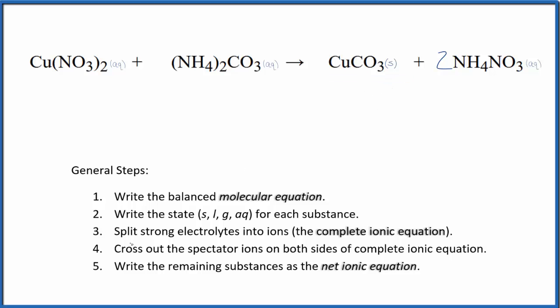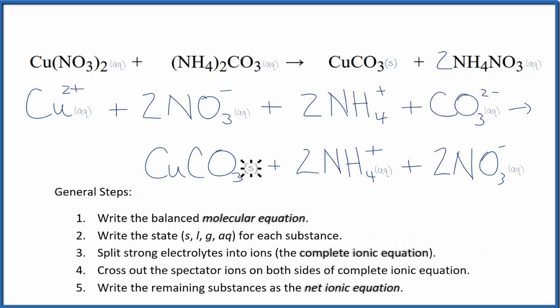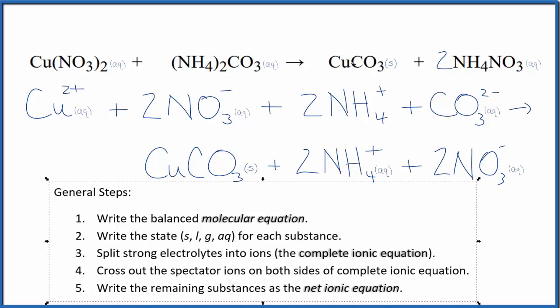Once we have our states, we can split the strong electrolytes into ions. This will give us the complete ionic equation. That looks like this. So we split the aqueous compounds, and then the solid here, this copper 2 carbonate, it's a solid. Remember, that's our precipitate.